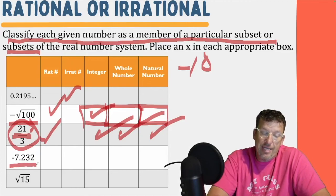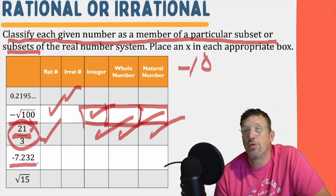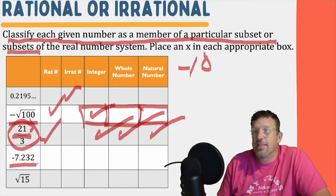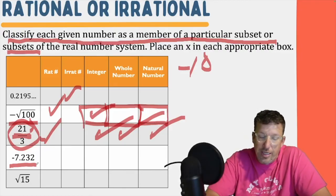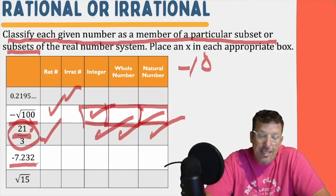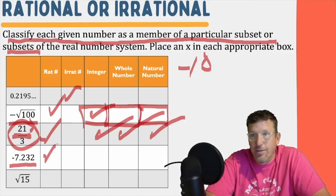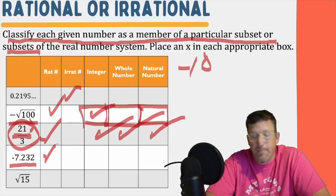Now we have a decimal — a negative decimal — negative 7.232. Don't let that negative number freak you out. A lot of kids see a negative decimal and think it must be irrational. No — we're just looking at the decimal side of it, and that 232 stops. It's a terminating decimal, so it's definitely a rational number. Is it a natural number? No, because it has a decimal. Is it a whole number? No, because it has a decimal. Is it an integer? No, because it has a decimal.